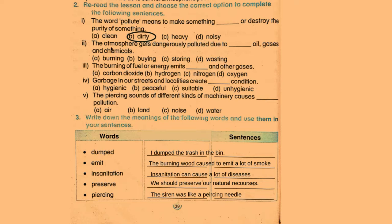The atmosphere gets dangerously polluted due to dash — oil, gases and chemicals. The options are: burning, buying, storing, and wasting. The correct answer is burning.